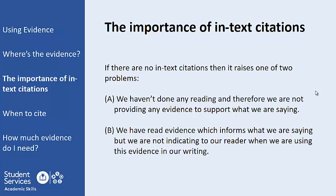The key point to take away from all of this is the importance of referencing as the way to tell our reader about the evidence we are using within our writing. Sometimes people lose sight of why referencing is important. You should always remember that academic writing must be supported by evidence, and that our referencing — in this case in-text citations — is how we tell our reader about the evidence we are using within our writing.